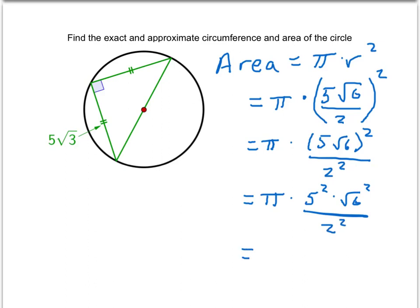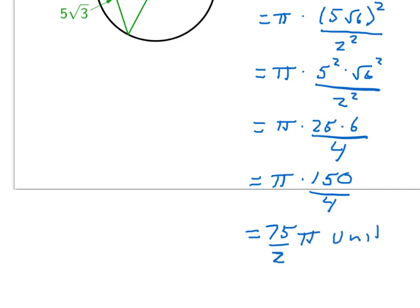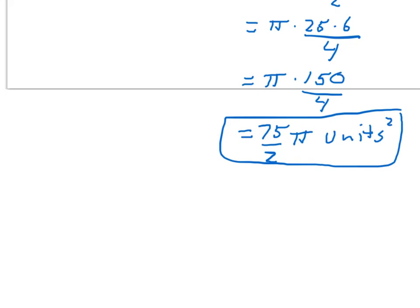That simplifies one step further to π times 25 times 6, all over 4. And 25 times 6 is 150 over 4, but 150 over 4 can reduce to 75 over 2. So our exact area would be 75π/2 square units. And if asked for an approximate answer, you'd type that into your calculator and get approximately 117.810 square units.